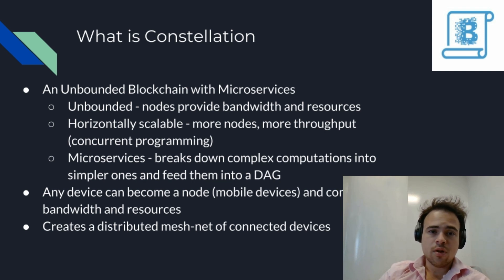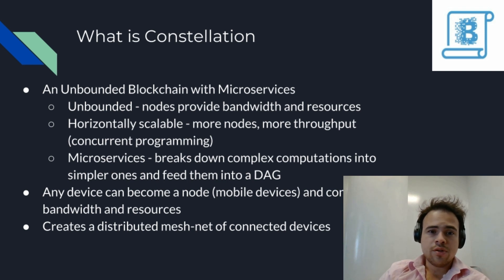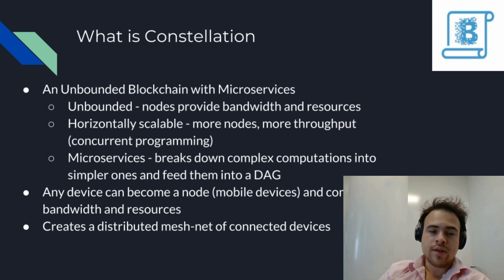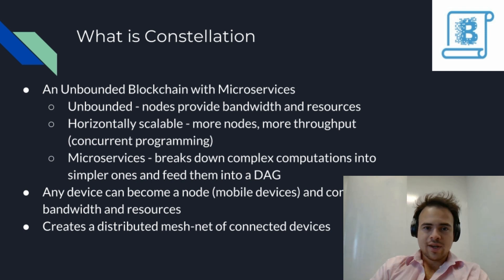Constellation's mission is to make a truly decentralized, scalable distributed ledger system capable of running enterprise-grade distributed apps. The way they're doing that is by taking a distributed app and breaking it down into microservices that can be fed into a DAG computational environment, which they call the extended trust chain. Constellation is an unbounded blockchain with microservices.